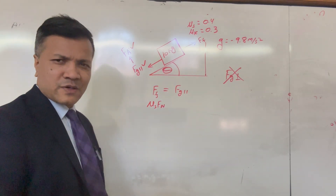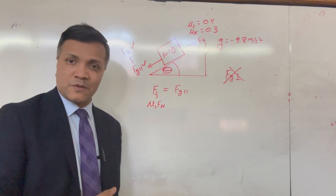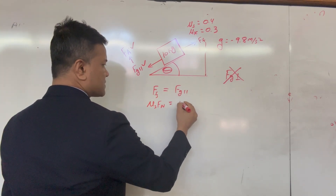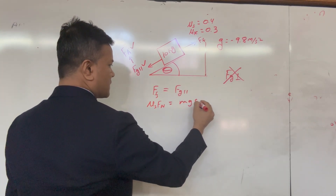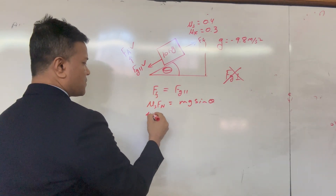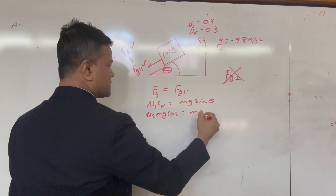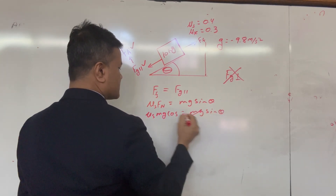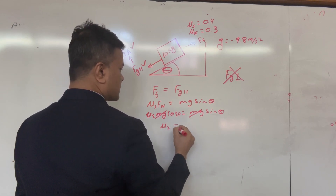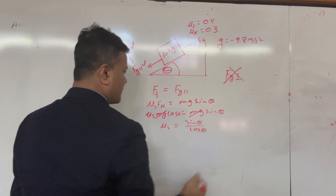We use μs rather than μk because we are finding the maximum friction possible. So: μs·mg·cos(θ) = mg·sin(θ). The mg cancels, giving us μs = sin(θ)/cos(θ).